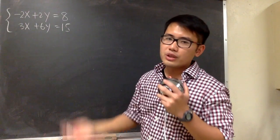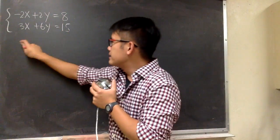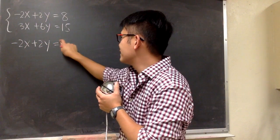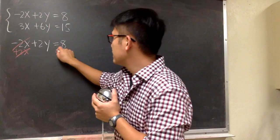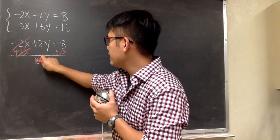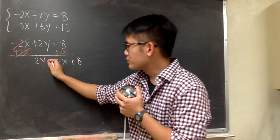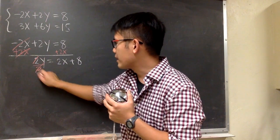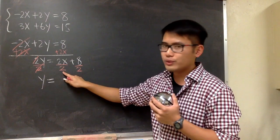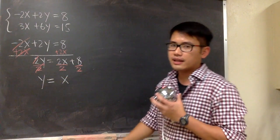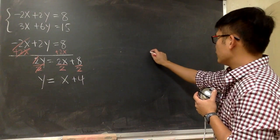The first equation is not ready for us to graph, because we want to graph the equation in the form y = mx + b. So let's work on that. Negative 2x plus 2y equals 8. We add 2x on both sides, giving us 2y = 2x + 8. Then divide everything by 2, and we have y = x + 4. Now we are ready to graph.